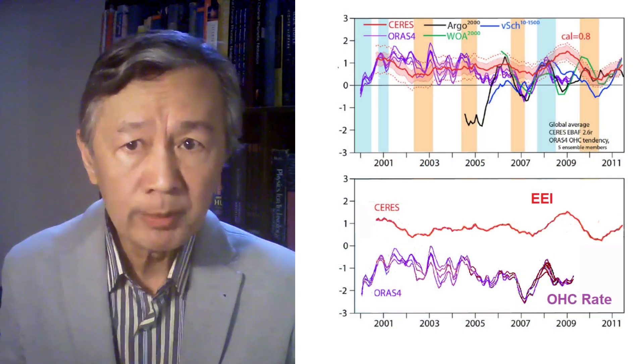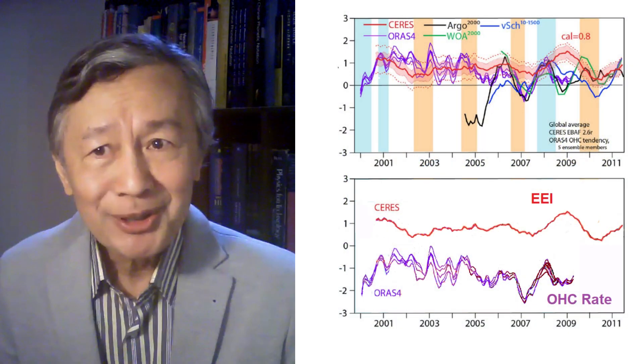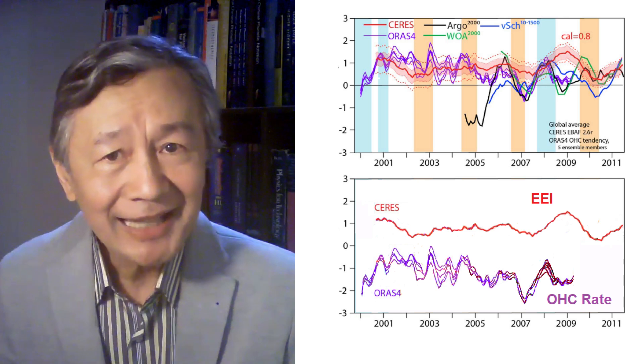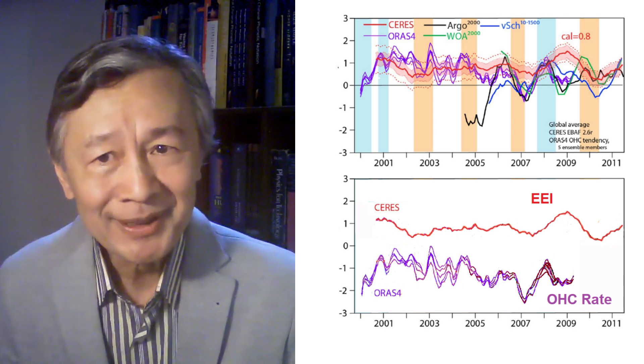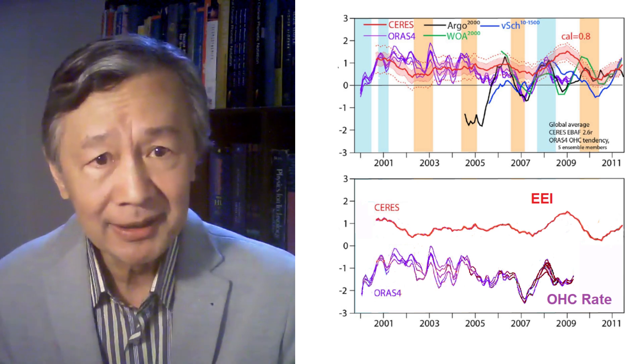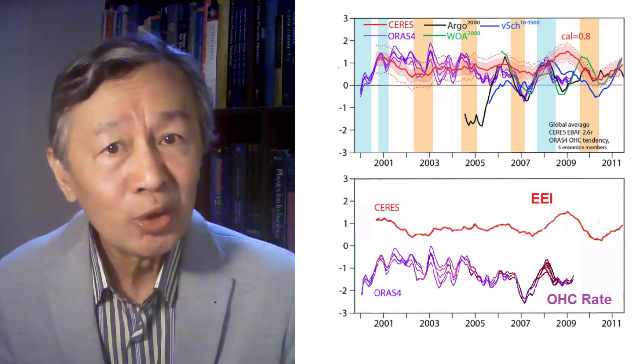This implies that all CERES data published after 2019 are not the original instrumentally observed. Return to his talk. In this diagram, an adjusted CERES EEI curve was used to replace the simulated EEI. Still, the phases of EEI and the rate of OHC curves are actually opposite, except for the year 2007.